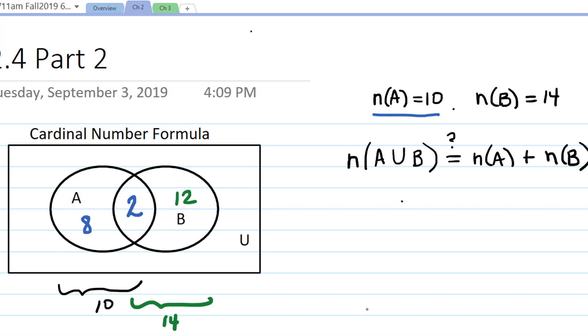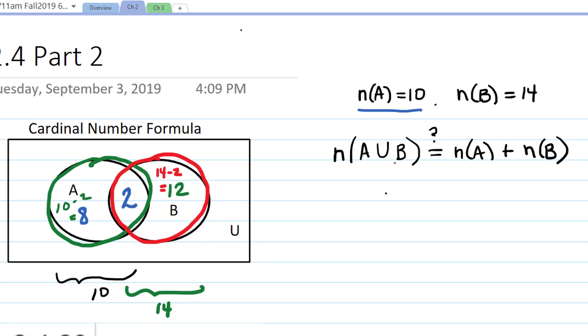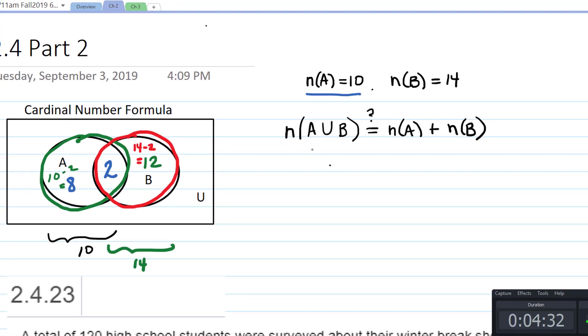In order to have 10 in this circle, if you know that there are 2 in the center piece, then there would have to be 10 minus 2 is 8 remaining in this piece over here. And in order for there to be 14 in this circle, if you know that there are 2 in the intersection, then there would have to be 14 minus 2 equals 12 over here. So now the number in A union B is not 24. How many is it? 22.